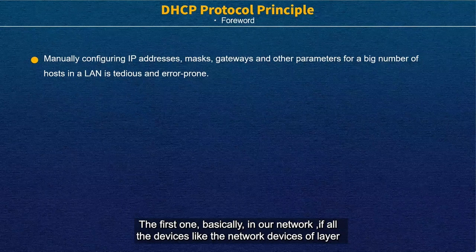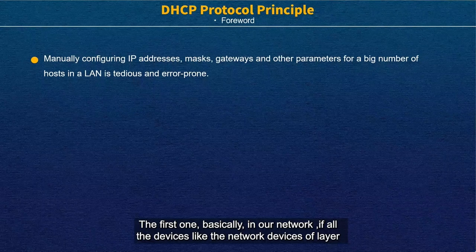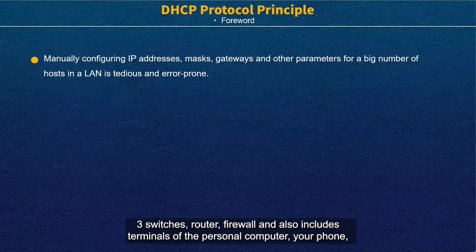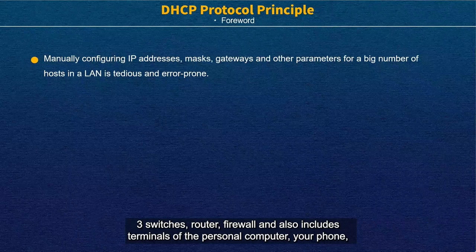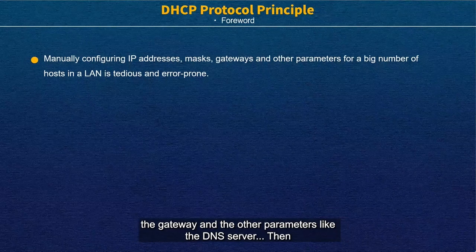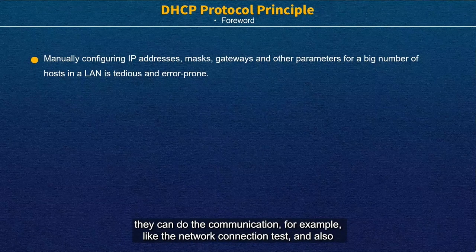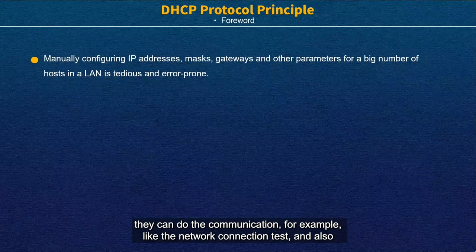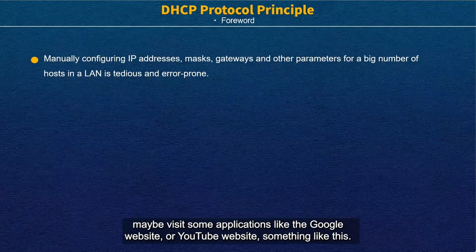Basically, in our network, all devices — like L3 switches, routers, firewalls, and terminals such as personal computers, iPhones, and similar devices — all need an IP address, a subnet mask, a gateway, and other parameters like a DNS server. These are needed before they can do any communication, for example network connectivity tests or accessing applications like Google or YouTube.